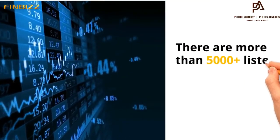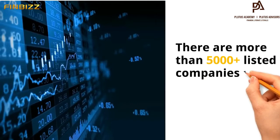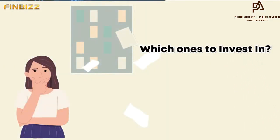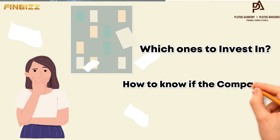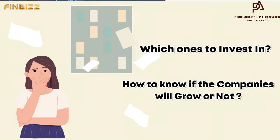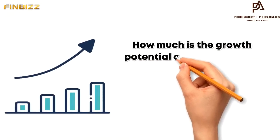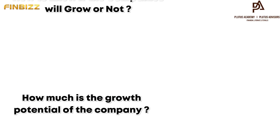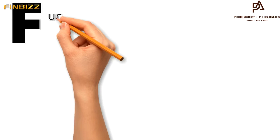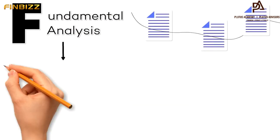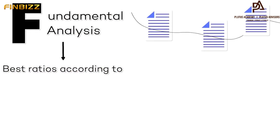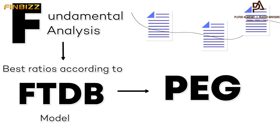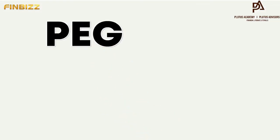There are more than 5000 plus listed companies in the stock market. Which ones to invest in? How to know if the companies will grow or not? How much is the growth potential of the company? Let's find out. When we do the fundamental analysis, one of the best ratios according to the FTDB model is called the PEG ratio.